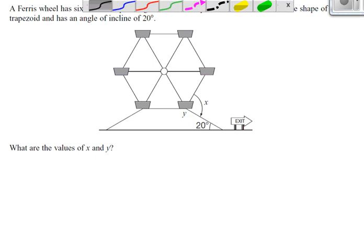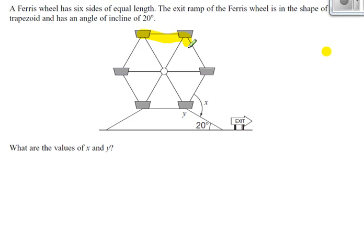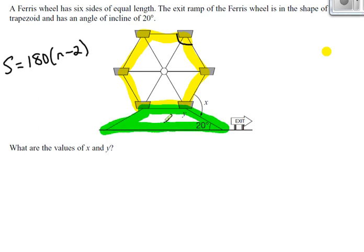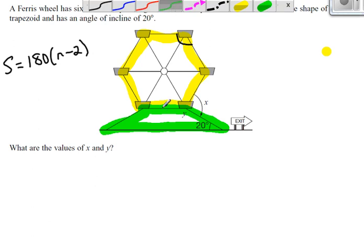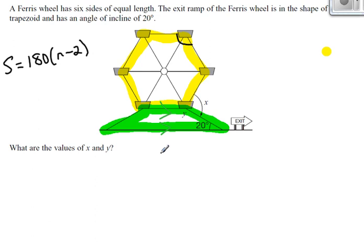What do I know? First, let's think about the information given to me. I know this is a six-sided polygon where all the sides are equal length. That might be important. If I have a six-sided polygon where all sides are equal length, I can use this rule to find the measure of the interior angles. I also know the exit ramp is a trapezoid. Here's my trapezoid. A trapezoid has two opposite sides that are parallel and the other sides are not parallel, so probably some parallel line system rules are going to come into play.